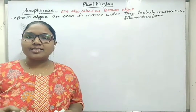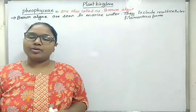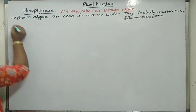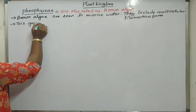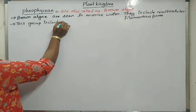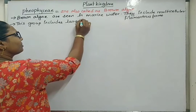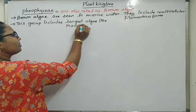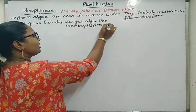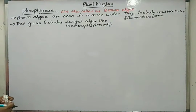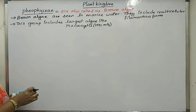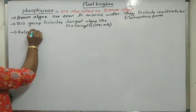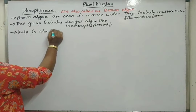Phaeophyceae members include the largest algae, that is Macrocystis, and also Laminaria, which is also called as kelts. Macrocystis ranges about 100 meters. This group also includes the largest sized algae — kelp, which is also the longest algae.